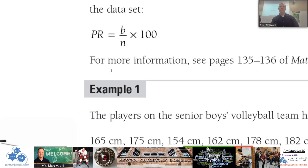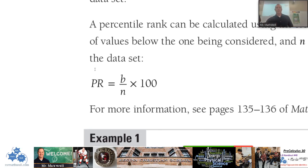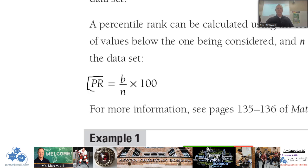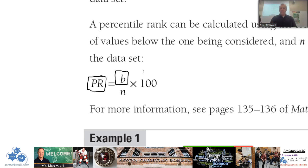So how do we calculate a percentile ranking? Here is the formula. PR stands for percentile rank. It equals B divided by N, times 100. The B value refers to all of the data points or values that are beneath the data value under consideration. So if your data value is here, you count the number of values beneath it. N is the total number of values. You can see where the percent comes from, especially when you multiply by 100.